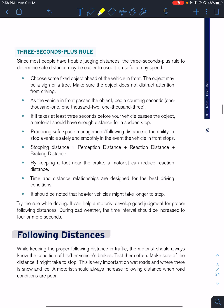Another method is the three-seconds-plus rule. Choose a fixed object ahead of you, such as a telephone pole, a sign, or a tree. As the vehicle ahead passes that object, begin counting 1,000, 2,000, 3,000. If it takes less than three seconds before your vehicle passes that same object, you do not have enough distance — you are too close. If you have enough time, you are practicing safe following distance. Remember, your stopping distance equals your perception and reaction time plus braking distance. The faster you're driving and the heavier your car is, the longer it's going to take to come to a complete stop.